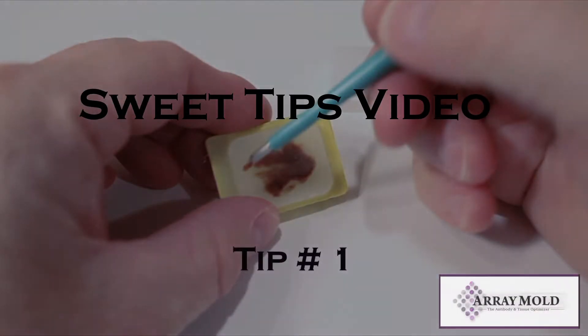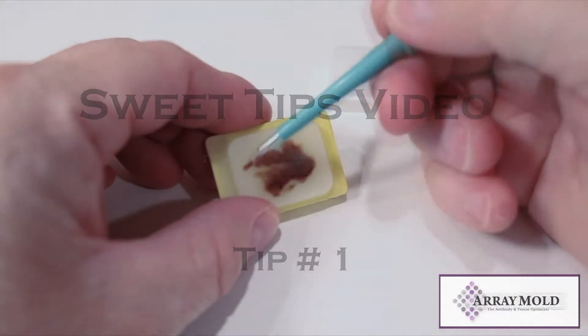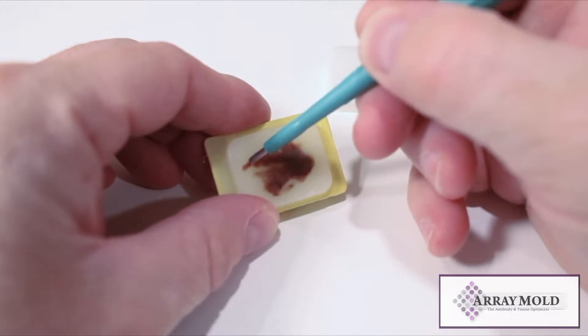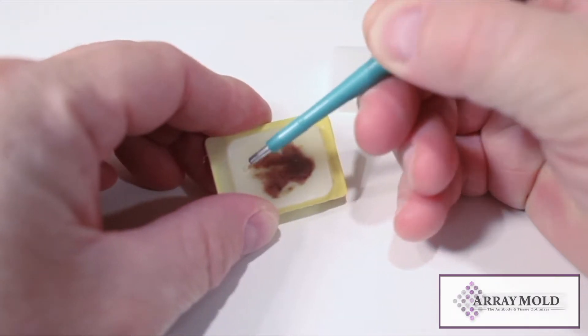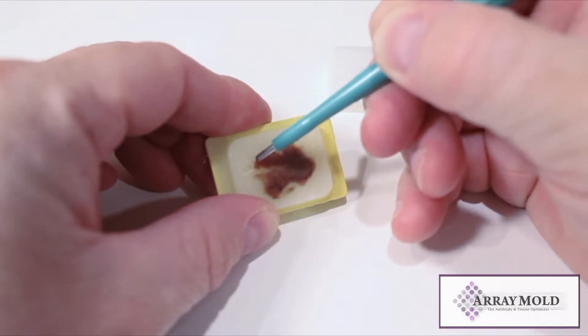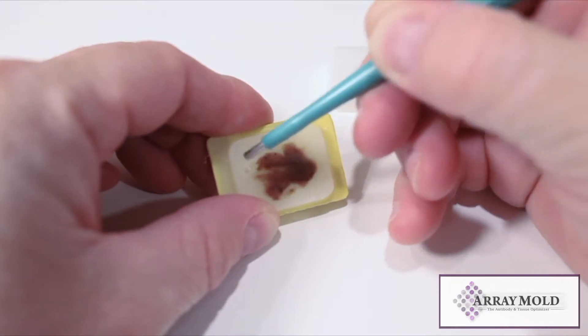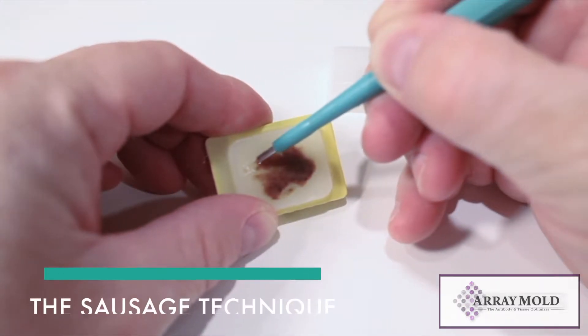The first technique we will cover is called the scraping technique. This is an excellent technique for very shallow tissue blocks. Instead of doing multiple punches to fill your needle, we recommend scraping the tissue out of the donor block to fill the needle.